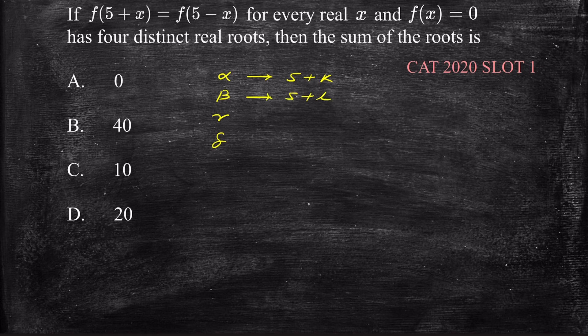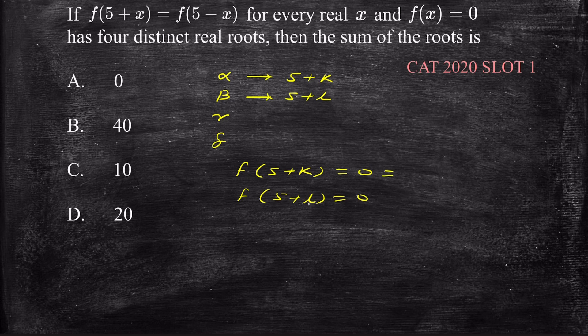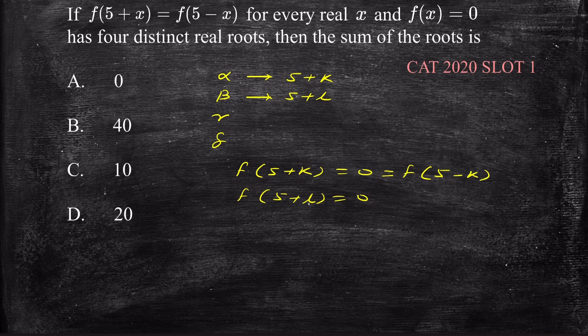Then f of 5 plus K should be equal to 0, and f of 5 plus L should also be equal to 0. At the same time, f(5 + K) is equal to f(5 - K) and f(5 + L) is equal to f(5 - L).